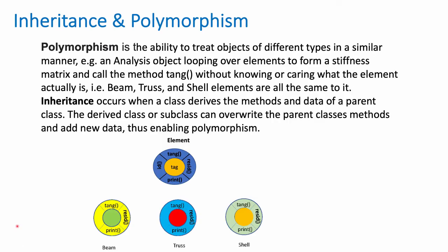Let's talk about inheritance and polymorphism. Polymorphism is the ability to treat objects of different types in a similar manner. For example, an analysis object in a finite element program would loop over all elements asking them for their tangent matrix. The analysis object does not care what type of element it is — all it wants is a tangent. It doesn't care if it's a beam, a truss, or a shell. The ability to treat all of these types of objects the same is what polymorphism is. Inheritance occurs when one class derives the methods and data of a parent class. In this example, beam, truss, and shell are deriving the methods and data of a parent class — for example, the tag and the id. The subclass is able to overwrite some of the methods it inherits; for example, the truss, shell, and beam are all overriding the print, residual, and tangent methods. This ability to override the parent class's method is what enables polymorphism.